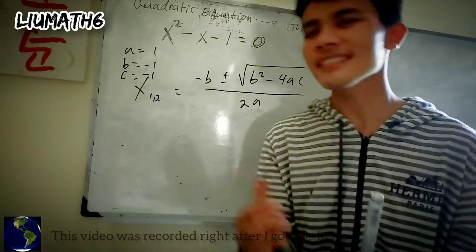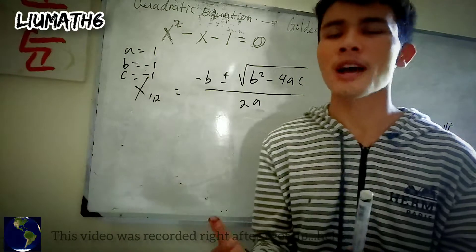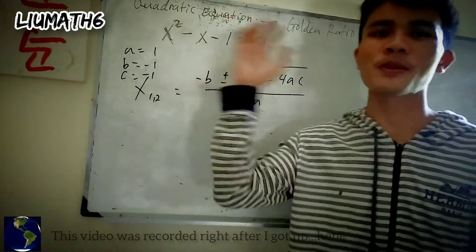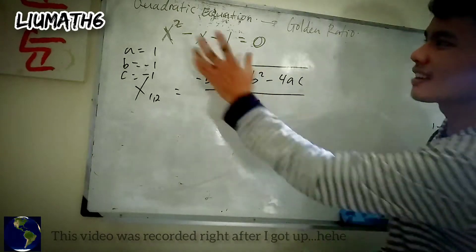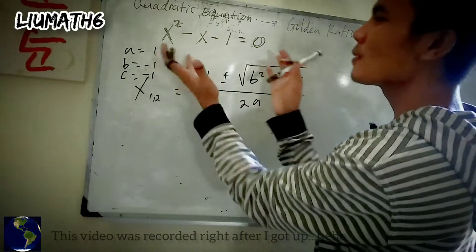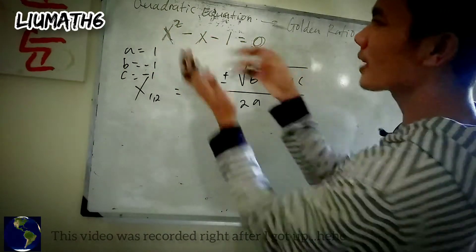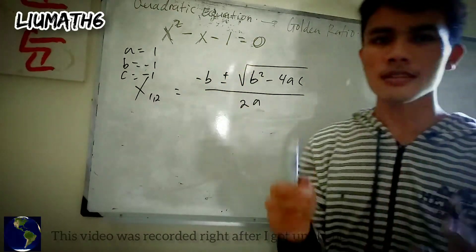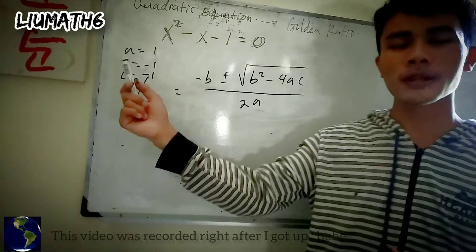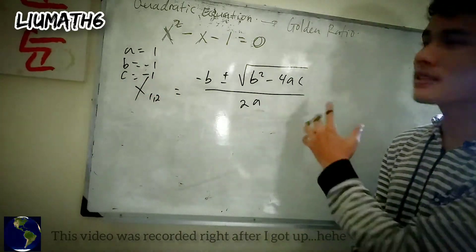Okay, so this video is fun because I'm going to show you how we can get the golden ratio from a quadratic equation. Is it possible? Yes, it is possible. So this is the quadratic equation that I'm talking about: x squared minus x minus 1 equals 0. The solution to this quadratic equation is the golden ratio itself.